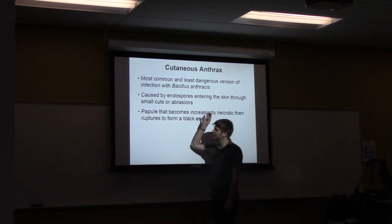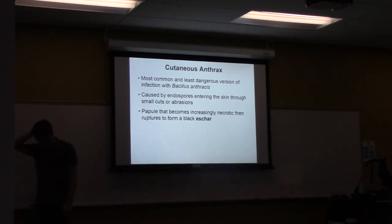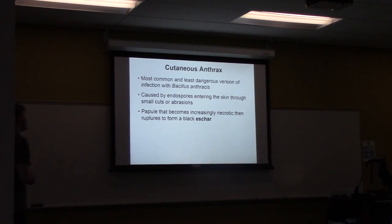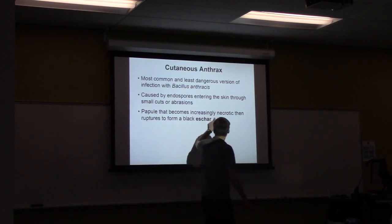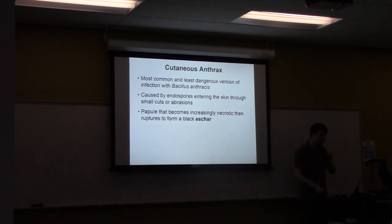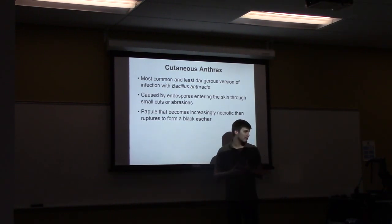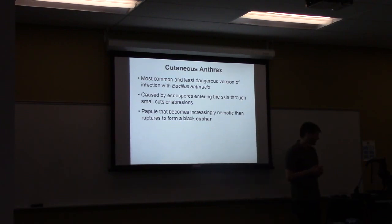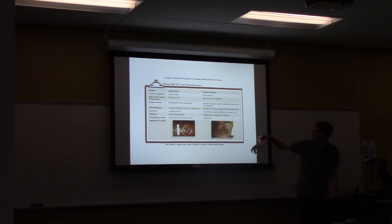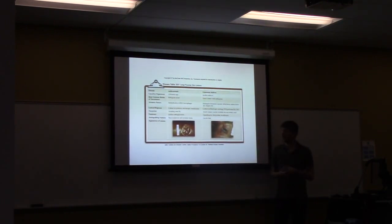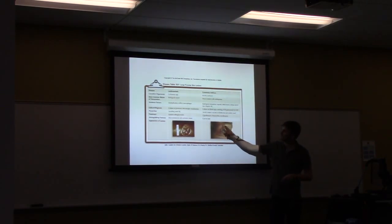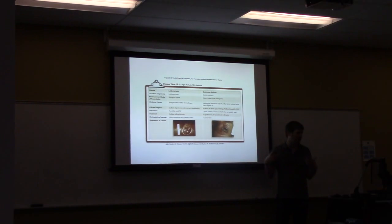Cutaneous anthrax is caused by Bacillus anthracis, a commensal found on cows. Humans can become infected through a skin break, causing a black necrotic lesion called an eschar. It can then disseminate into the bloodstream and potentially result in death, though it's relatively easy to treat if caught early and doesn't kill many people anymore due to antibiotics. You can tell cutaneous anthrax from leishmaniasis visually — anthrax produces distinctly black, necrotic pus, whereas leishmaniasis forms a large rubbery nodule that looks like an open granuloma.